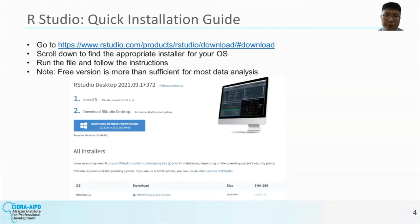Throughout this presentation, we will be using RStudio to run R. If you don't already have RStudio installed, don't worry — it is not hard to install and completely free to use. First, go to the link shown on this slide and scroll down to find the appropriate installer for whatever operating system you are using. For example, if you are using Windows, then use the Windows installer, and if you are using a Mac, then use the Mac OS installer. Once you have the installer, run it and follow the directions, and you should be done. Note that the free version is already extremely powerful in its own right and more than sufficient for most data analysis.